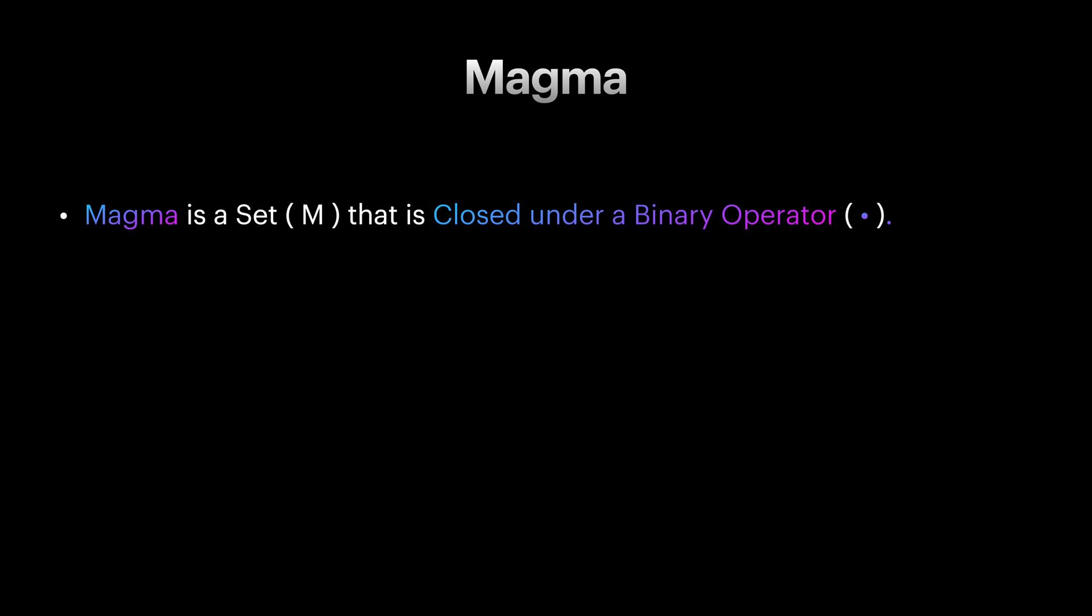Magma is a set of values with an operation. Let's call this operation concat and the set of values M. Concat is a function that receives two values from this set and maps it to another value in the same set. In other words, concat is closed on that set. As you see, magma is a pretty simple structure.